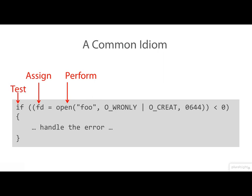Note that this extra pair of parentheses is essential. Without them, the code would call open, test that value for being negative, and then assign the boolean result of that comparison to fd — which is not what we intended at all.